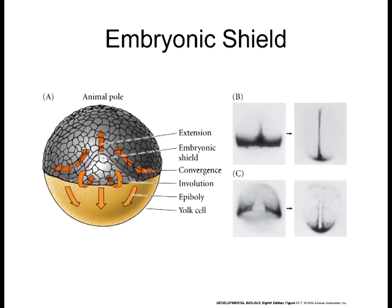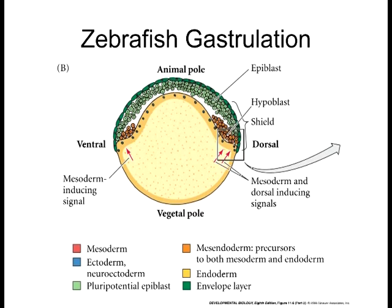As epiboli occurs, you also start getting involution of cells moving underneath the sheet of the embryonic shield. There is a key difference in zebrafish: in human and chick gastrulation, the hypoblast doesn't become any of the germ layers. In zebrafish, however, the hypoblast does become the mesoderm and the endoderm. In chick and human gastrulation, the hypoblast is necessary for patterning but does not become any of the three germ layers — that's a big difference.